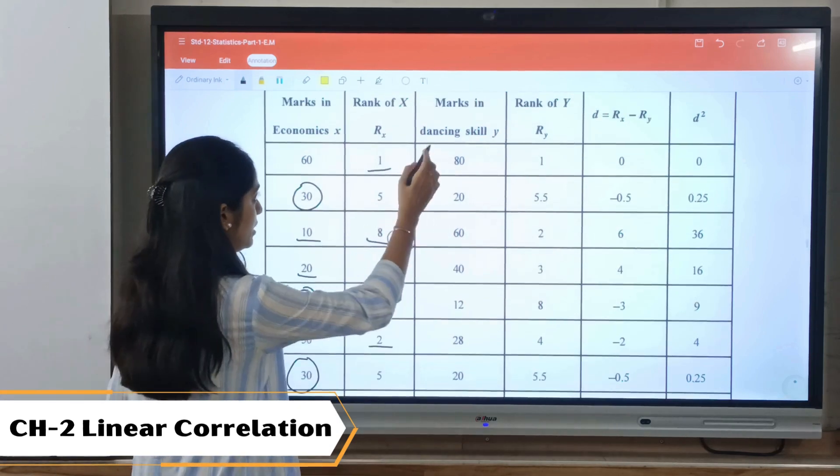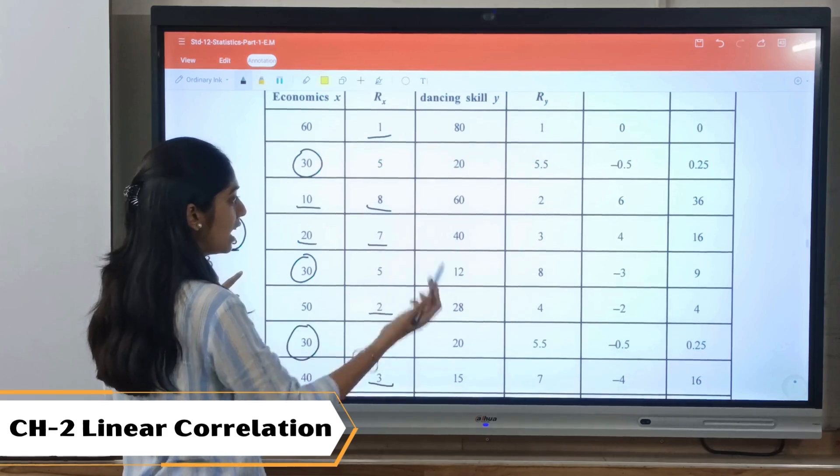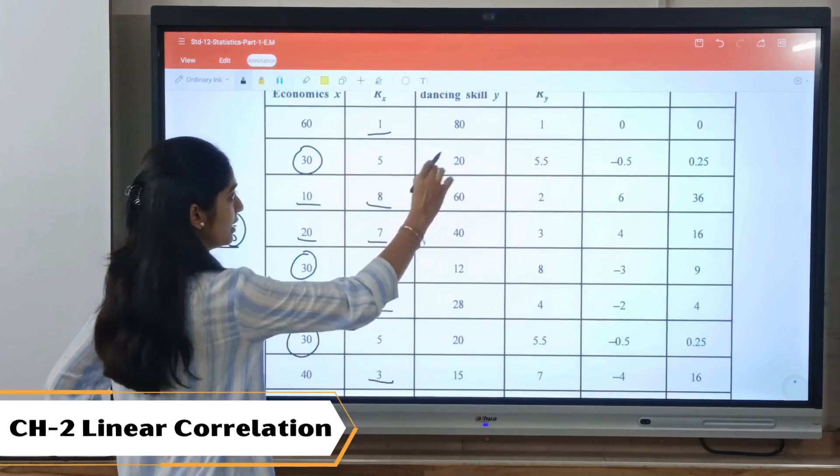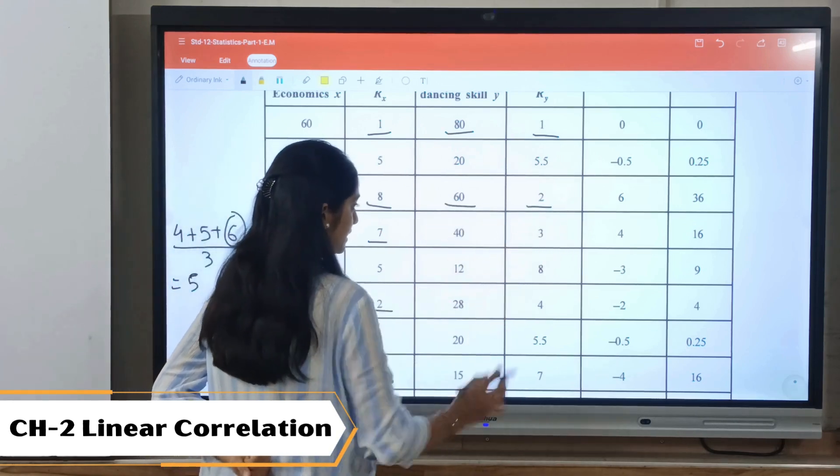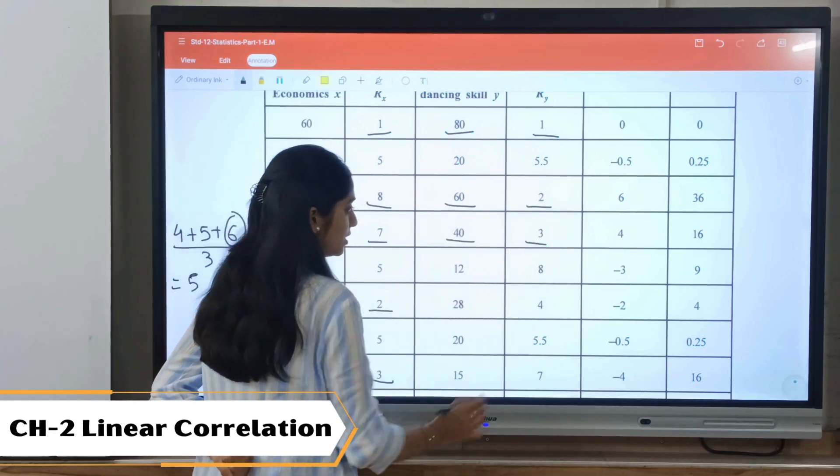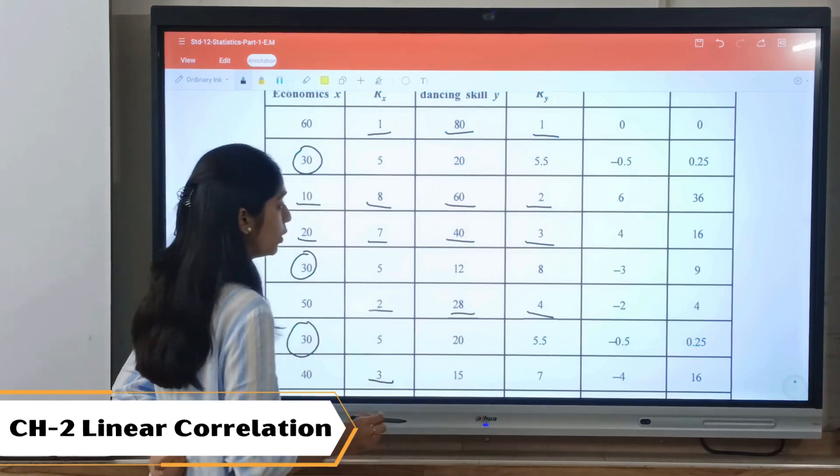Same way, in marks in dancing skills, higher number will be given first. 80 will be given first rank, then we have 60 will be given second rank, 40 will be given third rank, 28 will be given fourth rank.